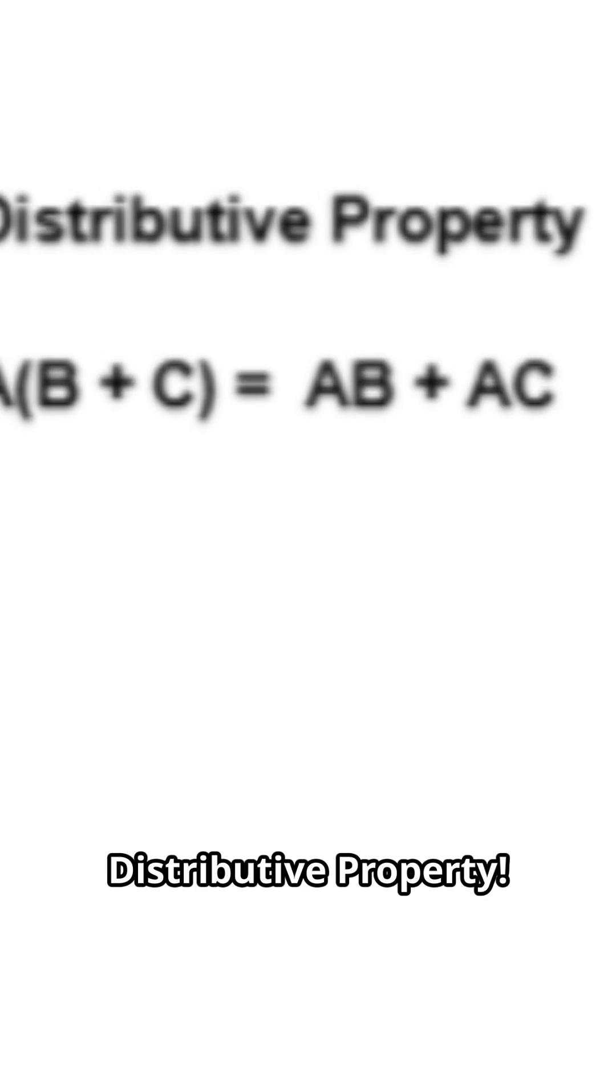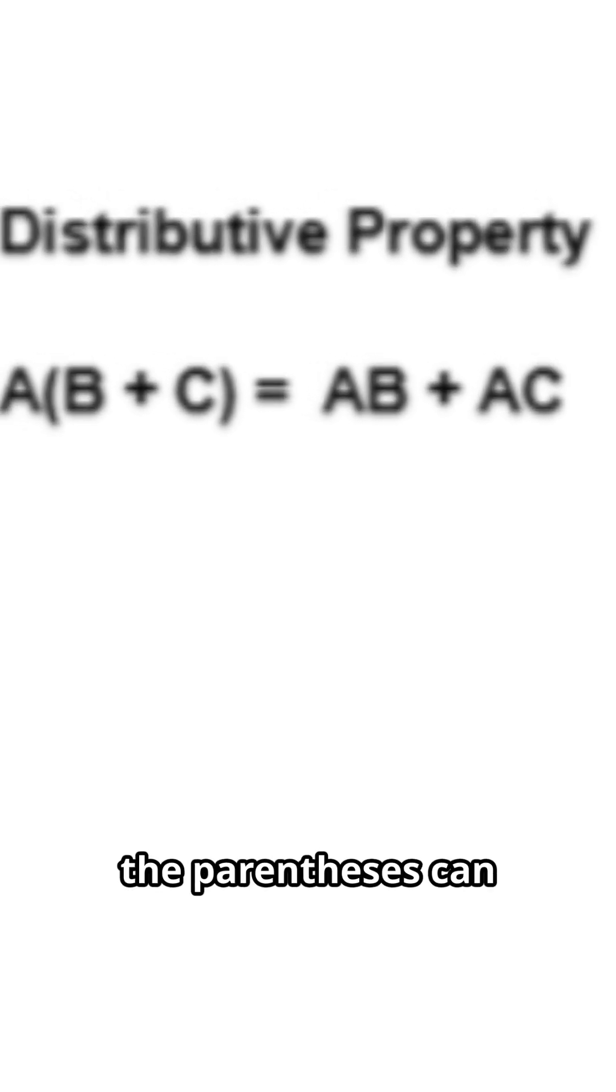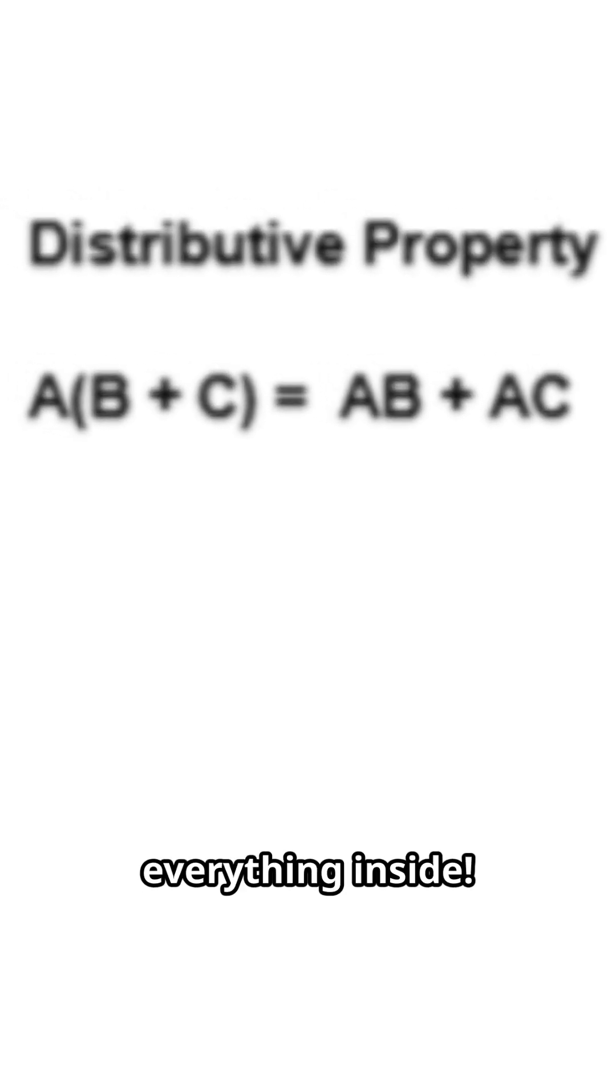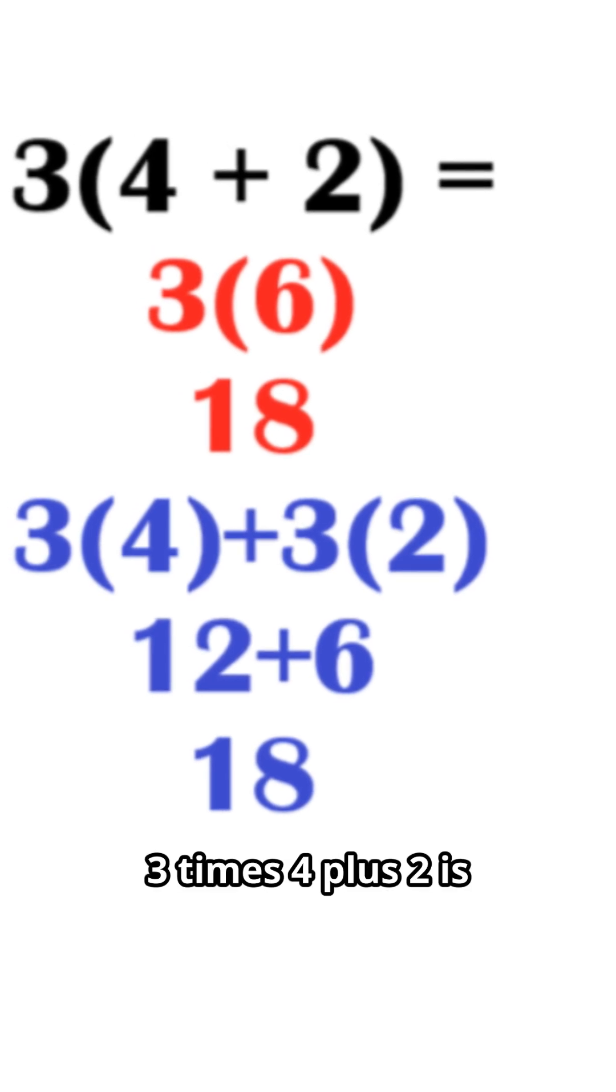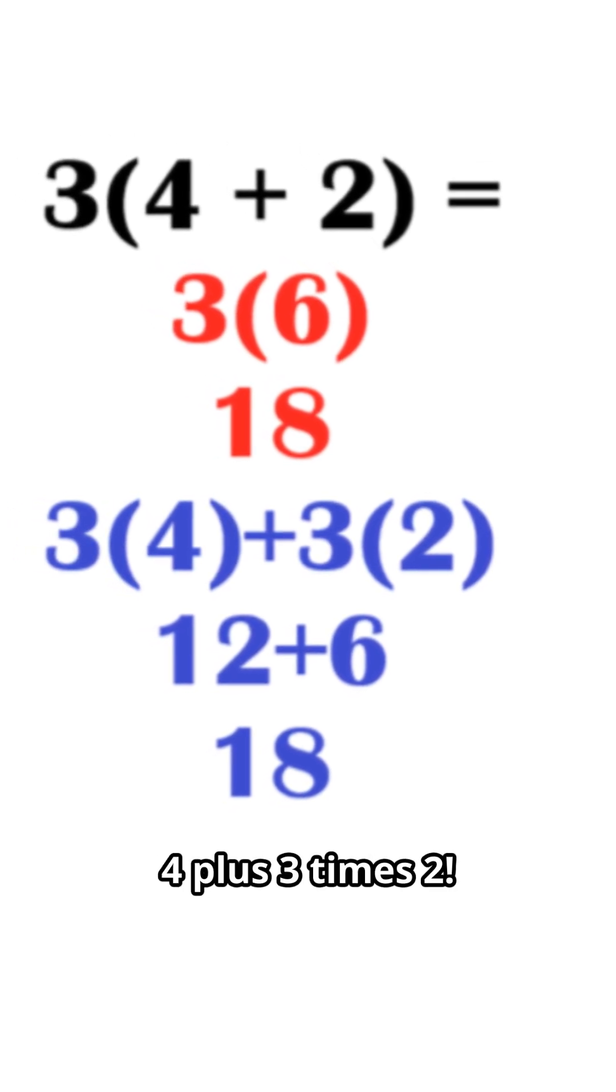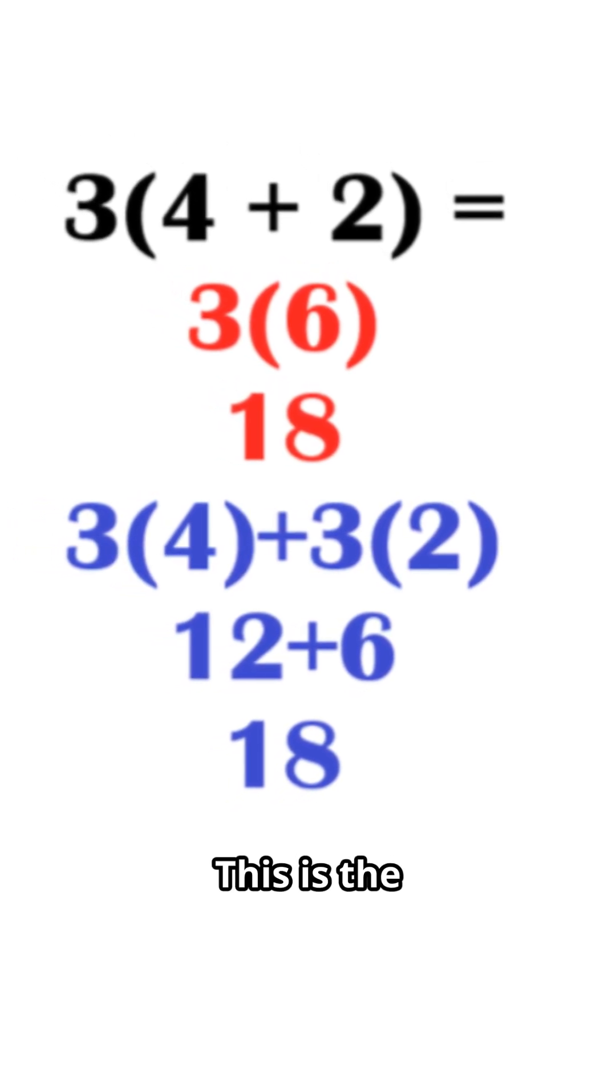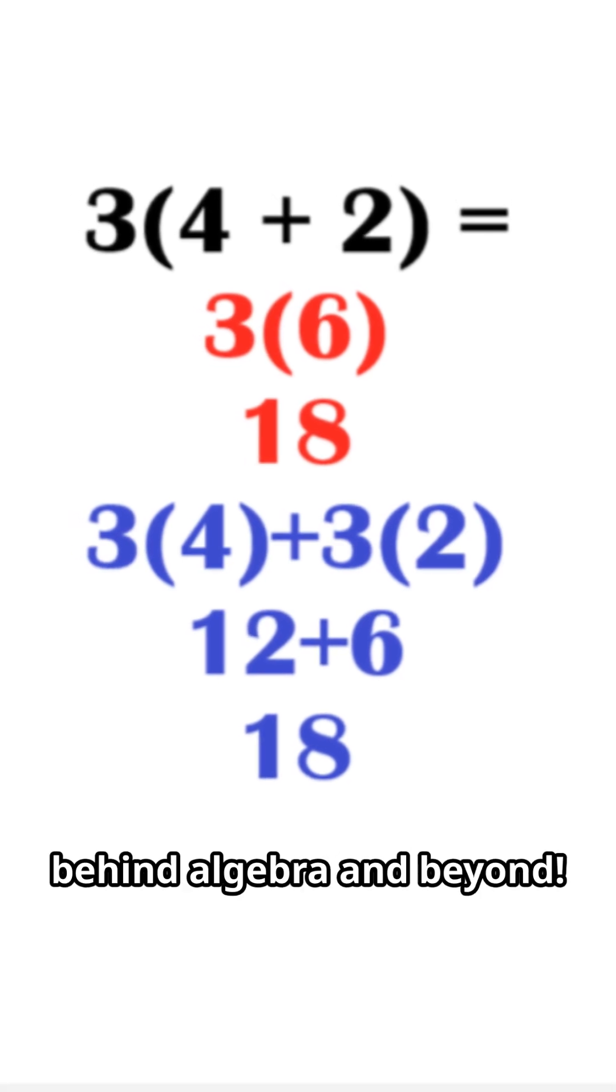This is the coolest one, the distributive property. A number outside the parentheses can distribute itself to everything inside. 3 times 4 plus 2 is the same as 3 times 4 plus 3 times 2. You get 18 either way. This is the fundamental concept behind algebra and beyond.